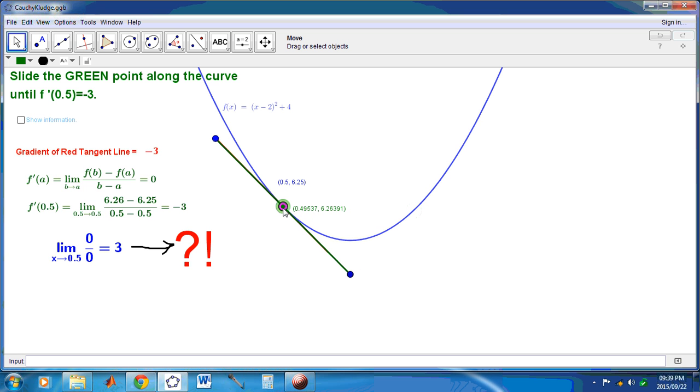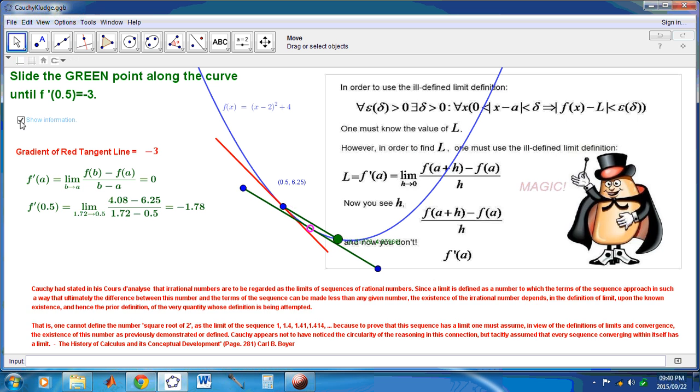So the problem really with Cauchy's kludge is that it uses limits, and limits are inherently flawed. Well, why are limits inherently flawed? Well, let's see.